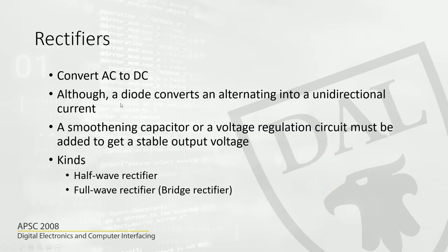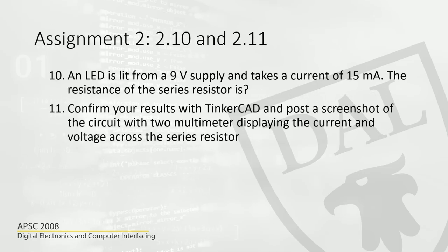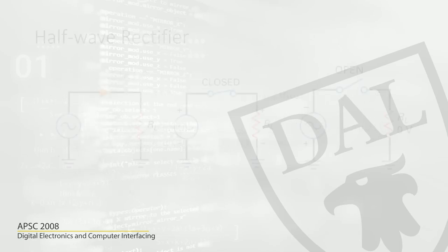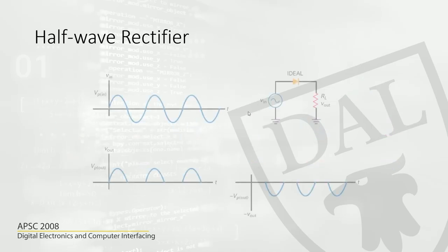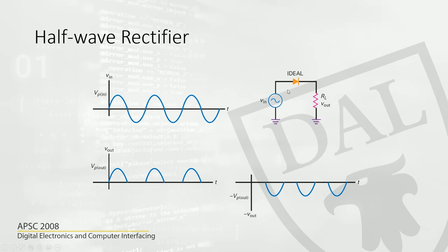In a half wave rectifier — similar to what we did with the function generator — we used a light emitting diode and a resistor to create a circuit. During the positive half cycle, the circuit will be closed; during the negative half cycle, it will be open, which means only the positive half cycle will be seen across the load. We also attached two light emitting diodes in opposite directions to see what appears during the front and back half cycles.